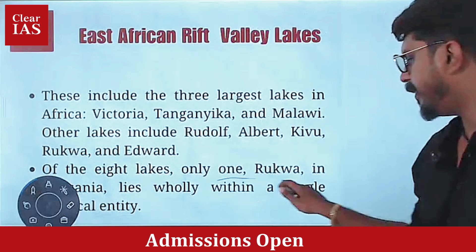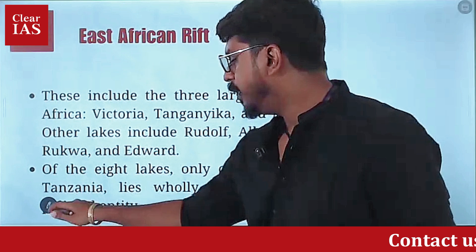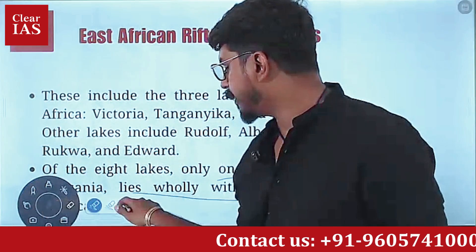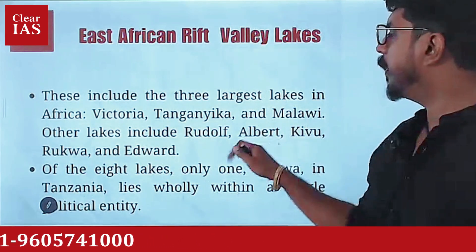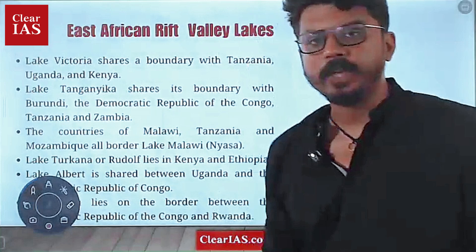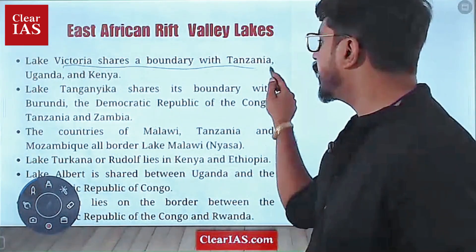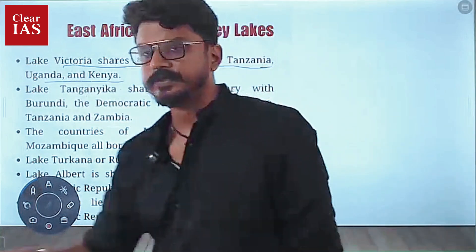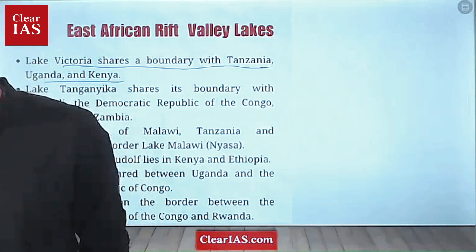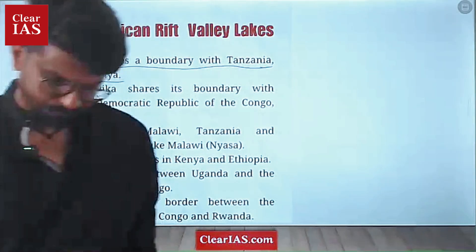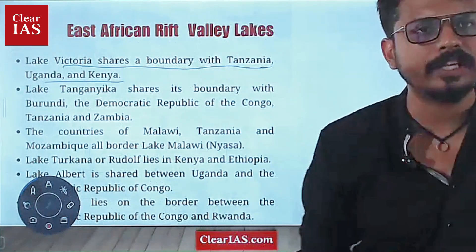Lake Rukwa is the only lake that lies only within a single country. Now let's see the political boundaries of the other lakes. Lake Victoria touches Tanzania on the south, and Uganda and Kenya on the north — it shares a boundary with Tanzania, Uganda, and Kenya.